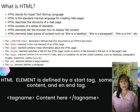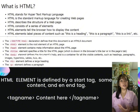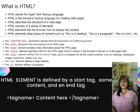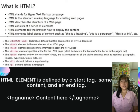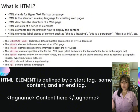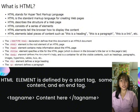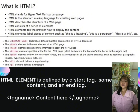HTML consists of a series of elements, and these elements tell the browser how to display the content. HTML elements have little pieces of content such as headings, paragraphs, links, images, and more.